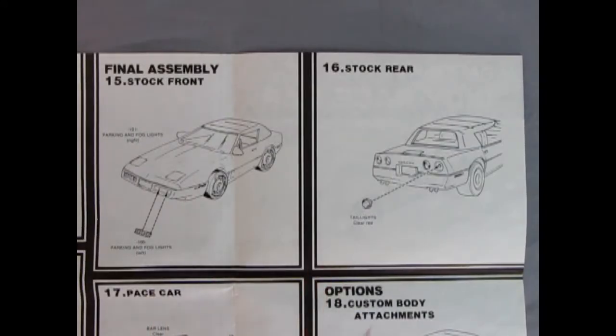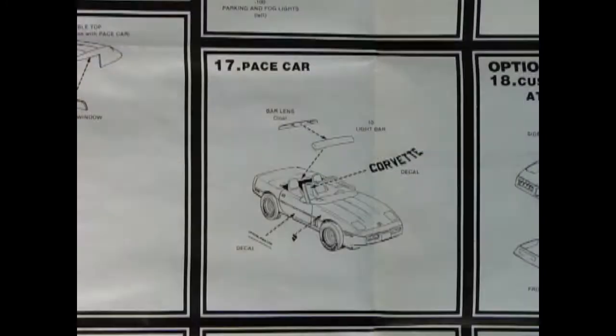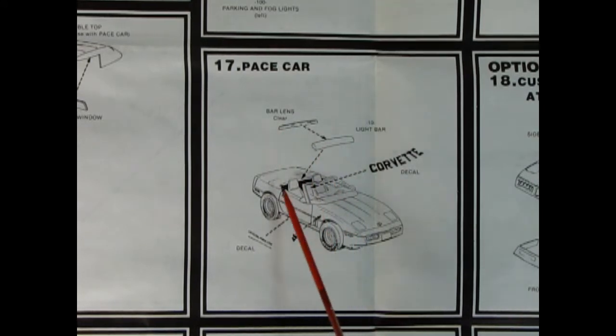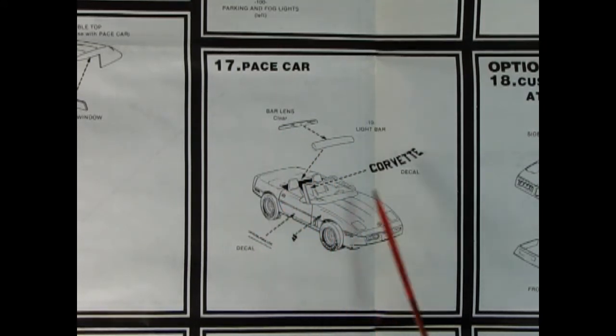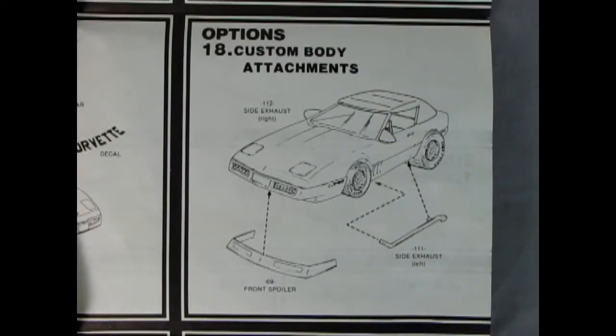Panels 15 and 16 show the front and back of the car and the parts you need to finish that off. You got your parking and fog lamps gluing into place here and then our four red tail lights going on there. Panel 17 shows the pace car bits. You do get the bar lens and the light bar - that'll glue together and glue right on the back here. Then there's your official pace car decals and the Corvette decal going across on the windshield.